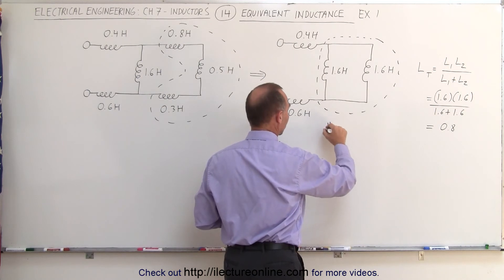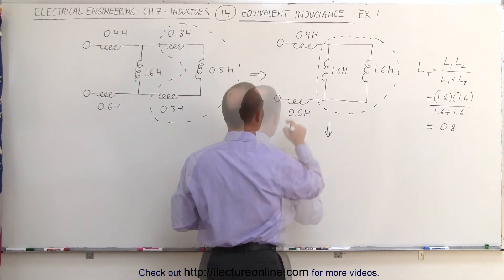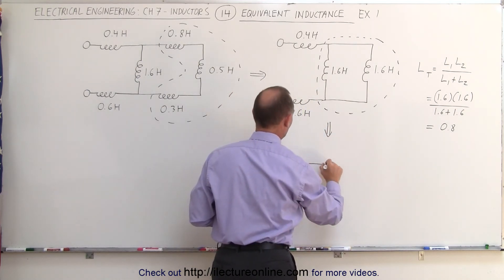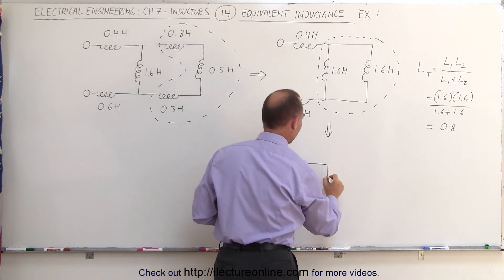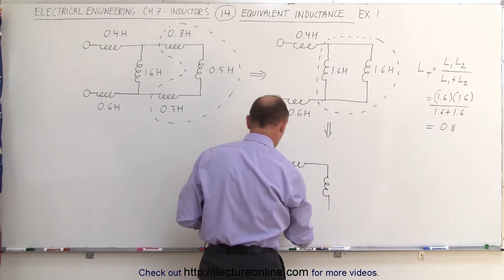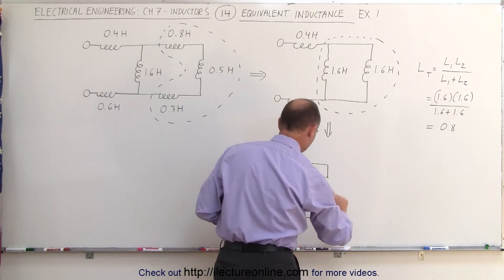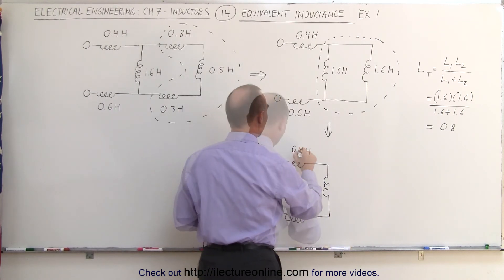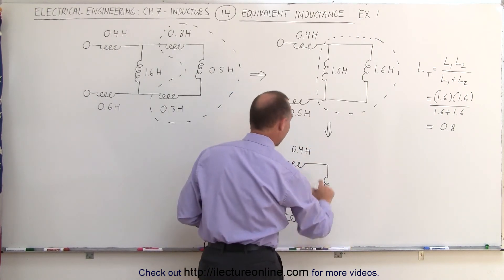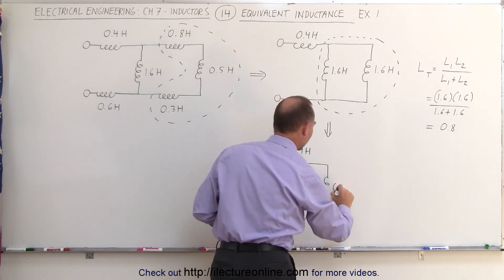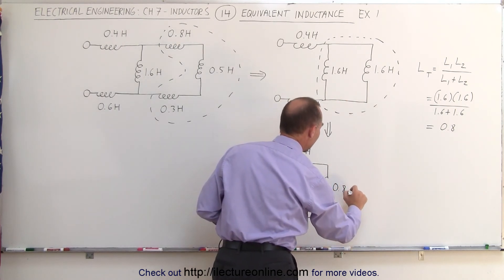So now we're going to redraw the circuit as follows. These two are now combined into a single inductor. This one is still the same. So this is 0.6 Henrys, and these two combined now become a single 0.8 Henry.